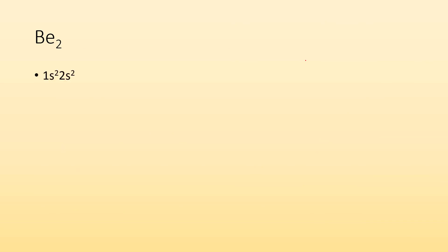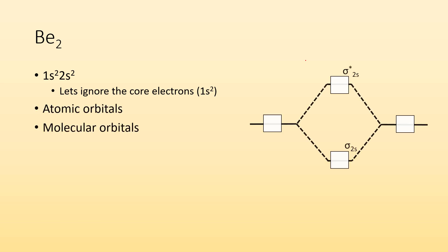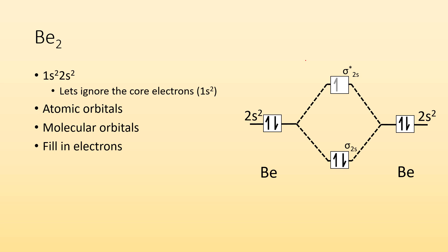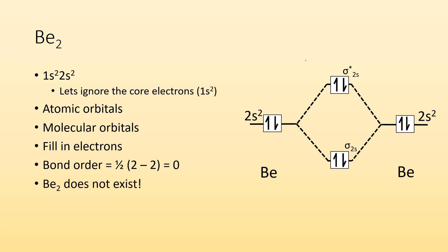From here on out, we can ignore the core electrons. For Be2, let's ignore those 1s2 electrons — they'll fill the bonding and anti-bonding and negate each other. Draw the atomic orbitals, draw the molecular orbitals, fill in the electrons. Beryllium is 2s2. Placing all 4 valence electrons gives us a bond order of 0 for Be2. Be2 does not exist — you're not going to find a Be2 molecule.